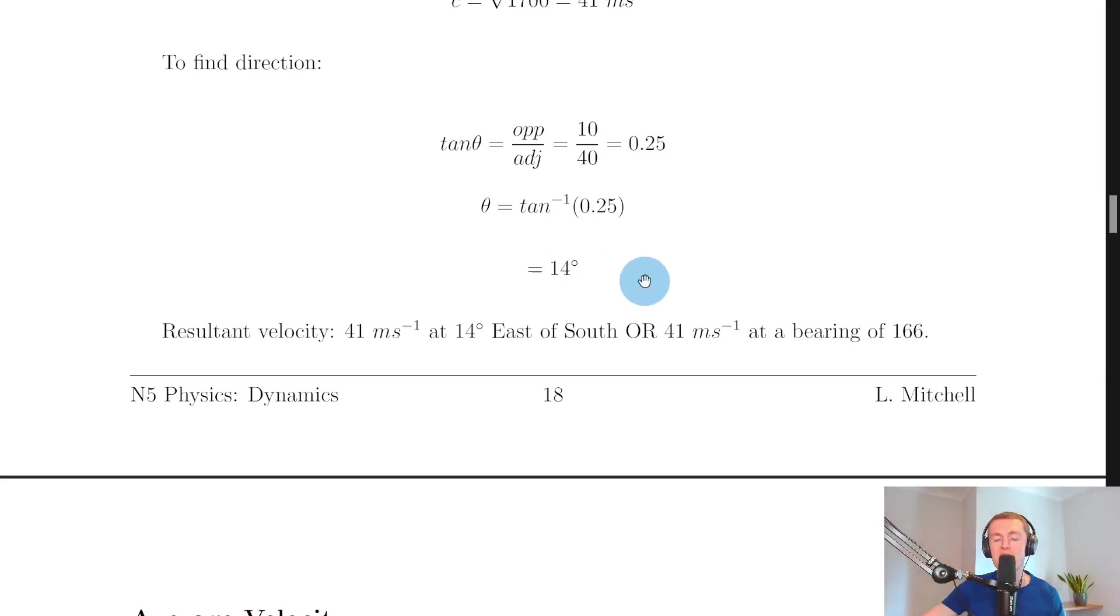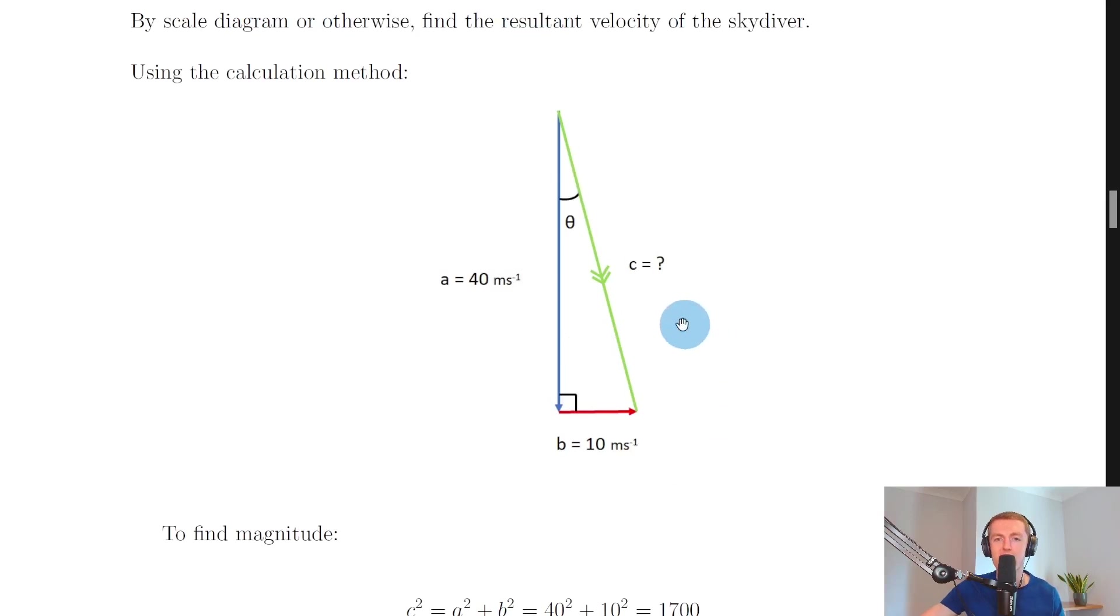And now we're in a position to write down our final statement but we need to think about the direction and using this angle with compass points or bearings. So our angle is 14 degrees and we need to be able to describe this in terms of compass points or bearings.